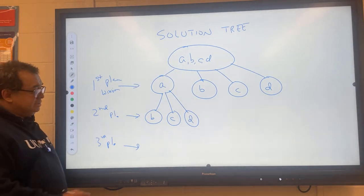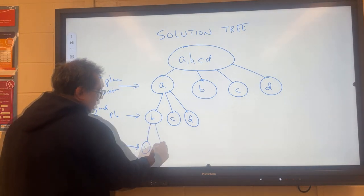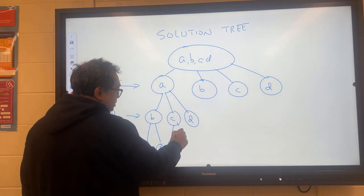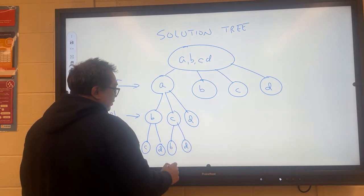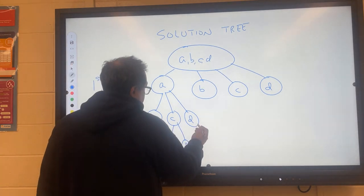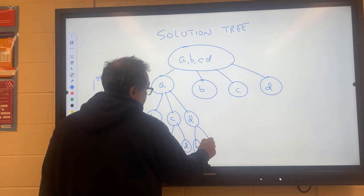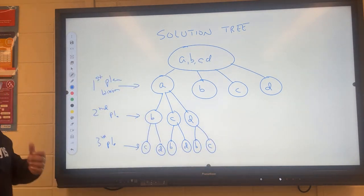So I'm going to draw here. If C has come in in second place, B and D are the possibilities for third place. And then if D has come in in second place, then B and C are the possibilities for third place.